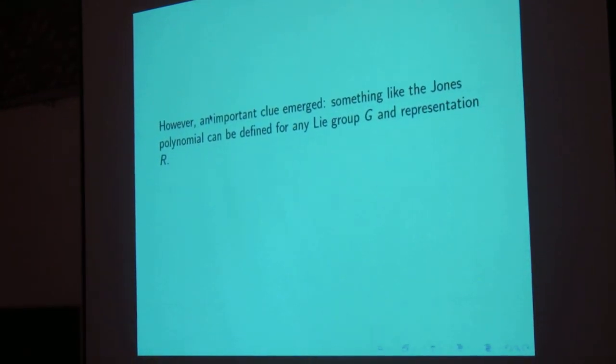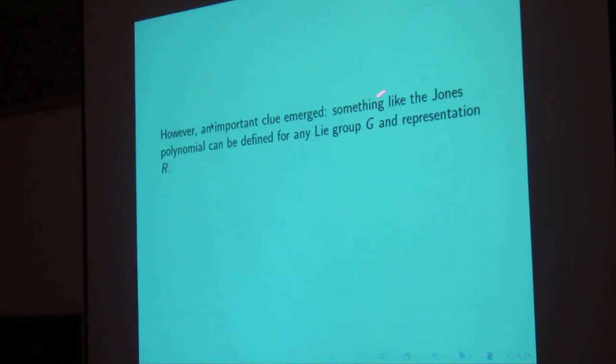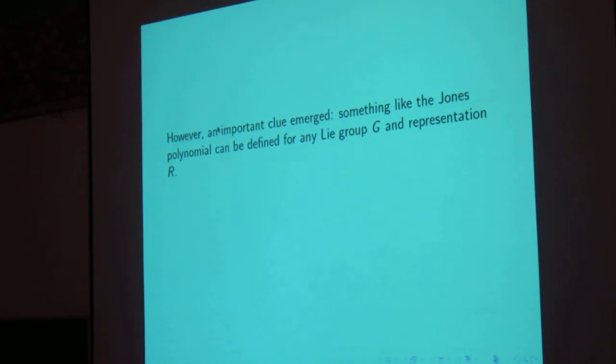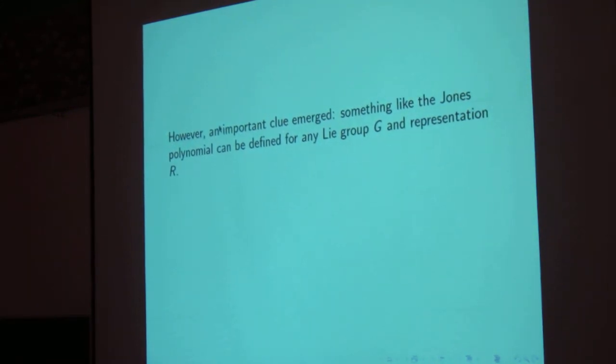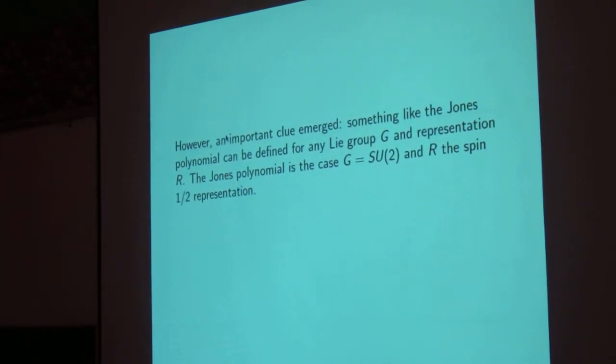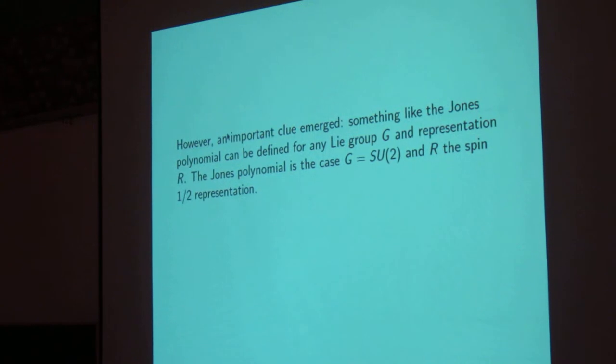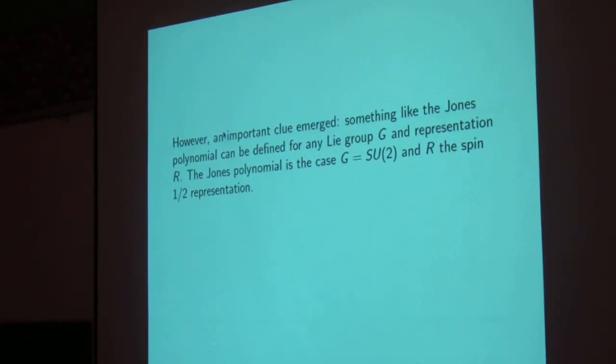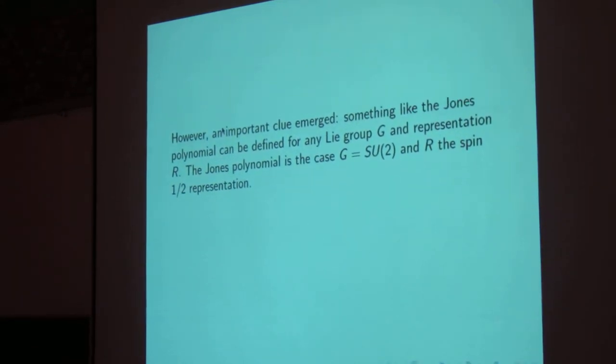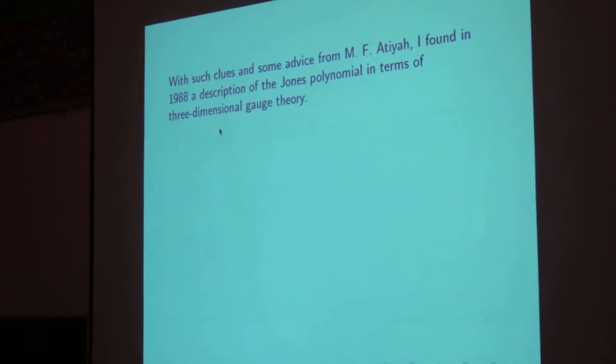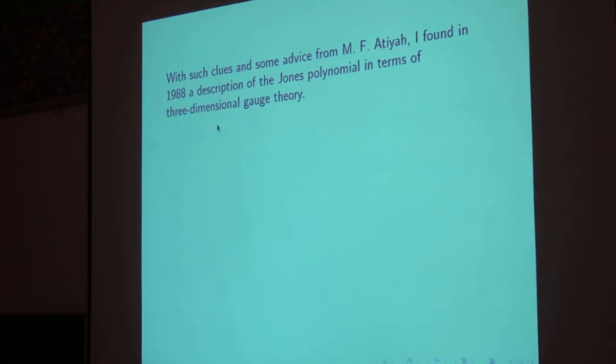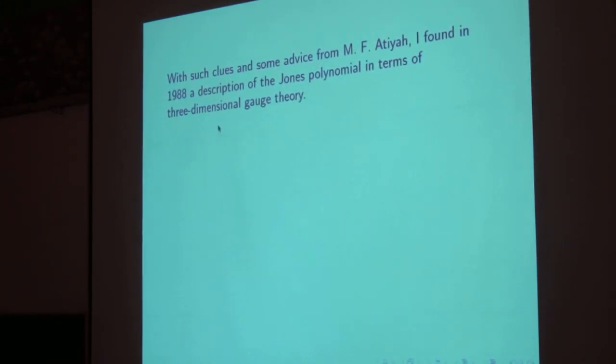In the course of this work in the mid-80s, an important clue emerged: something like the Jones polynomial can be defined for every Lie group representation of G. So the Jones polynomial is the case that G is SU(2) and R is the spin-half representation. And plus and minus you can think of as the spin-up and spin-down states of the spin-half particle. That has an analog for higher spin and also for other Lie groups. So with these clues and also some advice from the mathematician Michael Atiyah, I found in 1988 a description of the Jones polynomial in terms of three-dimensional gauge theory.